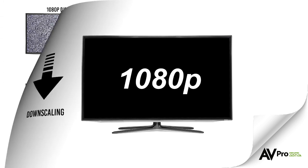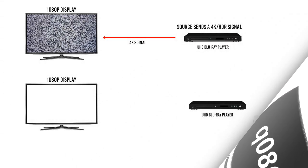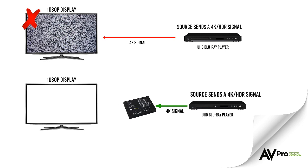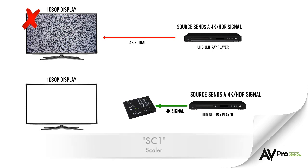Here are some examples of when you would need to scale a video signal. Here we can see a 1080p display receiving a signal from a 4K source, and the signal is unable to reach the screen. In order to get the picture on screen, we need to scale the video signal from 4K to 1080p. We can do this by using a scaling product — by placing the SC1 Scaler from AVPro Edge right before the display, we are able to convert the 4K signal to 1080p and get a picture on the screen.